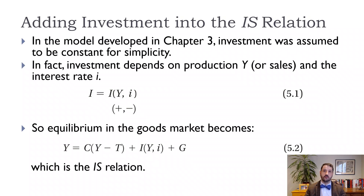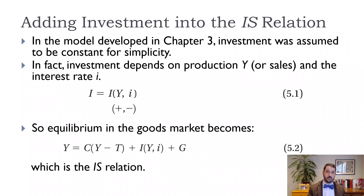The interest rate is essentially the price of investment. If you have to borrow — like getting a mortgage to build a new house or borrowing from a bank to build a factory or buy machines — that's one channel. But it's also the price of investment even if you don't need to borrow, because it's the opportunity cost: do you build a new factory or buy bonds?